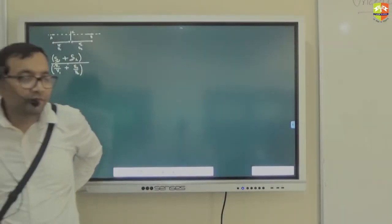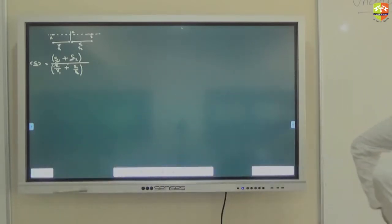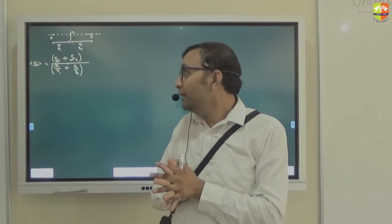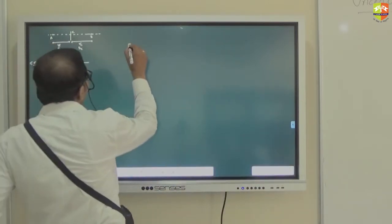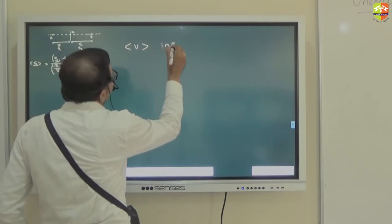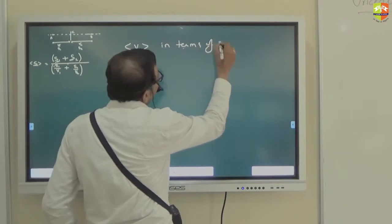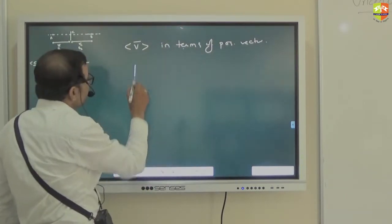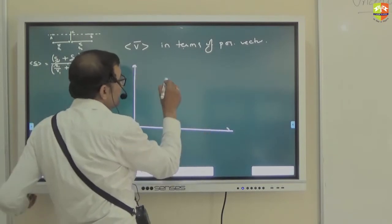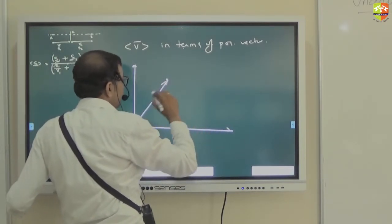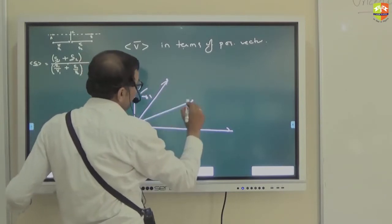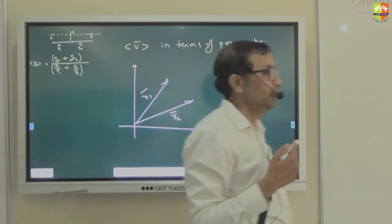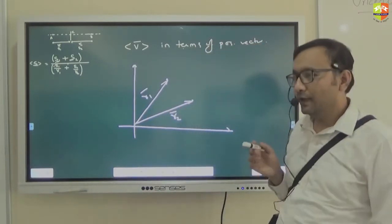We have discussed average velocity and average speed. Now, can we try to write the average velocity in terms of position vector? Right now the object is at this location — let's say the position vector is R1. And then the object goes there, and the position vector becomes R2. Can I write the average velocity in terms of R1 and R2?